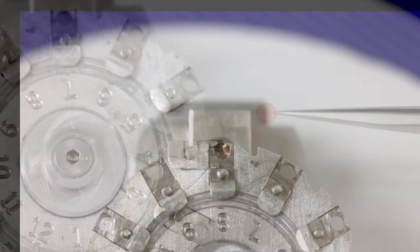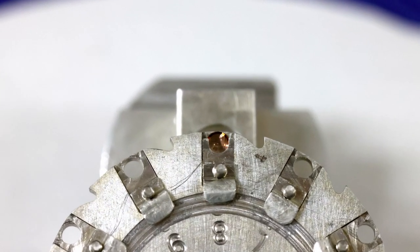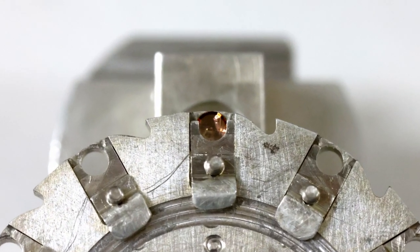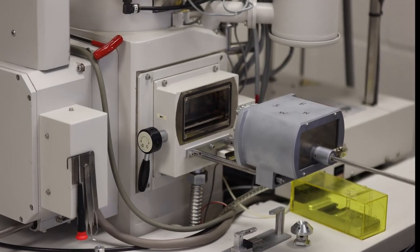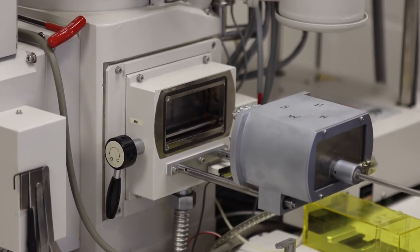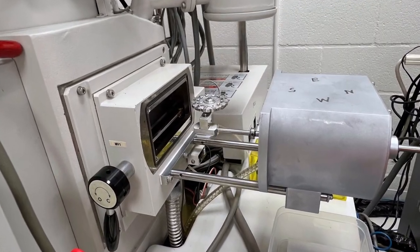Then we take these grids with the stained sections, place them in a fixture, and then we take that fixture and place it into the TEM.